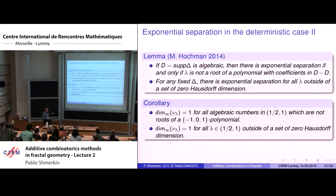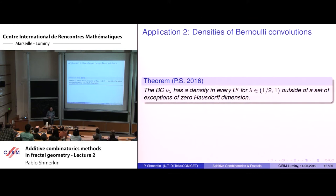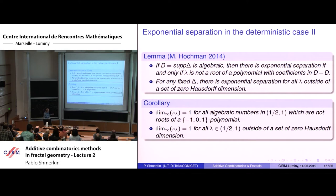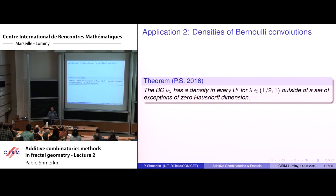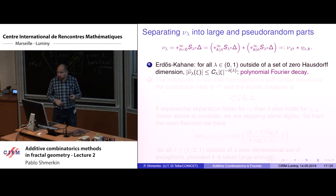Yesterday I mentioned a result not about Frostman exponents but about actual absolute continuity with L^Q density. For all lambda in the supercritical regime between 1/2 and 1, outside of a zero-dimensional set of exceptions, Bernoulli convolutions are absolutely continuous and have a density in every finite L^Q. The argument to go from the Frostman exponent result to this was already known — it is not completely trivial but the argument existed.